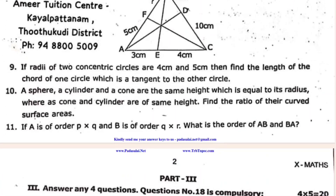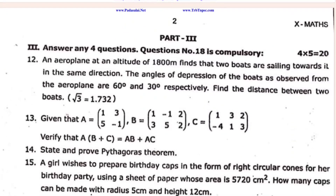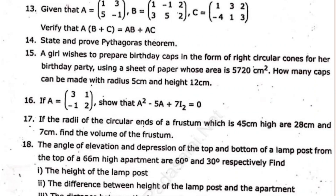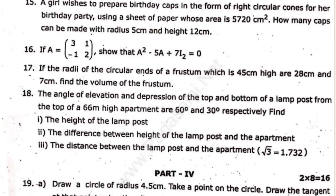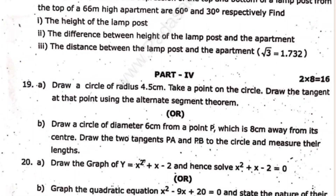In fact, the angle of depression of the top and bottom of the lamp post from the top of the 66 meter high apartment are 60 degrees and 30 degrees respectively. Find the height of the lamp post and the difference between the height of the lamp post and the apartment. I think it is trigonometry — trigonometry, I think so. 2 marks, 5 marks. Graph geometry — okay, very simple.